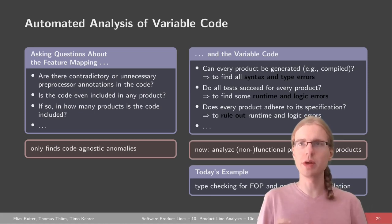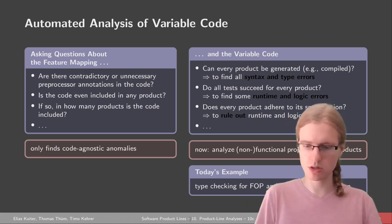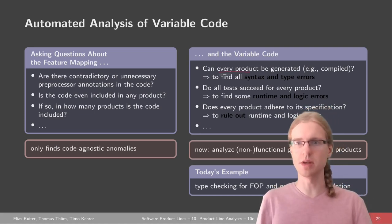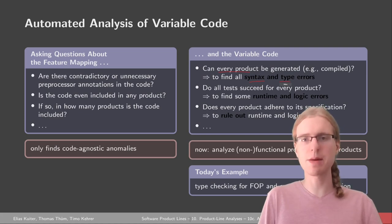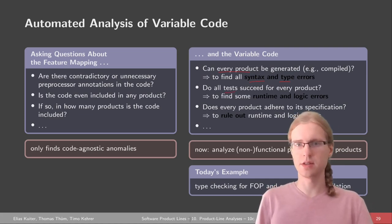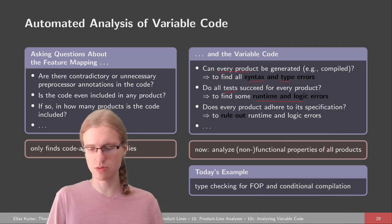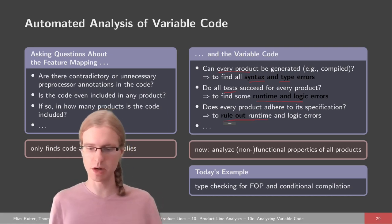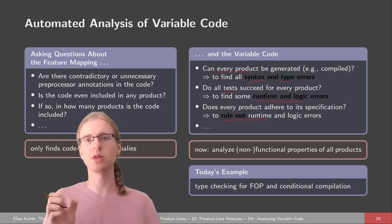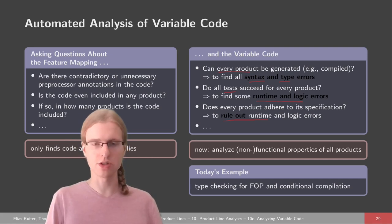Now we're trying to analyze the variable code — code which occurs in some products but not all. We can ask different questions here. For example, we could ask whether every product of the product line can actually be generated. Generated can mean compiling programs to find syntax or type errors, executing unit tests and integration tests to find runtime and logic errors, or using model checkers and formal verifiers with specifications to automatically prove that there are no mistakes and rule out errors for functional or non-functional properties.